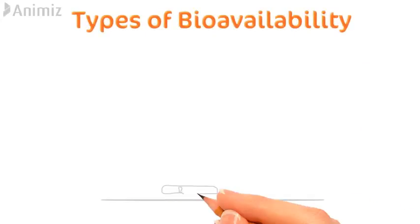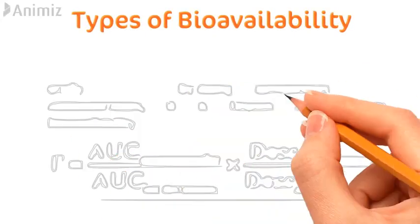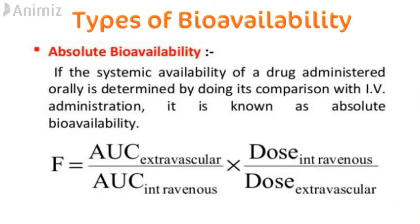Coming to the types of bioavailability, we have absolute and relative bioavailability. If the systemic availability of a drug administered orally is determined by comparison with IV or intravenous administration, it is called absolute bioavailability. We compare it with the IV route because in intravenous administration we directly inject the drug into the blood vessel.